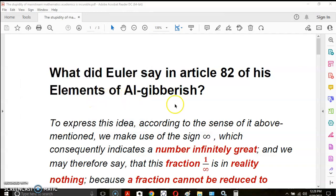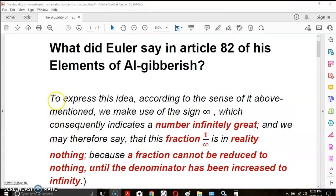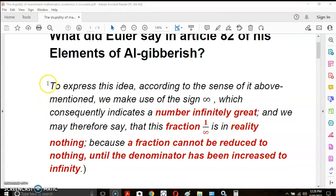So what did Euler say in article 82 of his Elements of Algebra? Actually they're called the Elements of Algebra but in article 82 it's Algebraish rather than Algebra. He says to express this idea according to the sense of it above mentioned we make use of the sign, and you see that upside down 8 which is the most garbage concept ever invented, which consequently indicates a number infinitely great. Well it indicates a number infinitely great which doesn't exist.